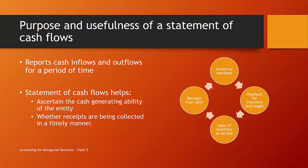It also helps us understand whether receipts have been collected in a timely manner. For a retailing-type organization, inventory is purchased and cash doesn't necessarily move at that point. The inventory will generally be paid sometime after arrival, depending on supplier terms. Wages are also paid after use. Then the inventory gets sold, but receipts from sales may happen at the time of purchase or be collected later. This creates a timing mismatch between when inventory and wages are paid and when cash is collected from sales.